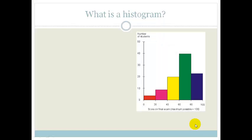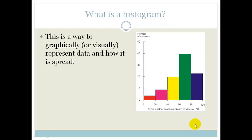So, what is a histogram? Basically, this thing on the right is a histogram. It is a way to graphically or visually represent data and how it is spread. It is like a bar graph, but there are no gaps between. It's usually used to display grouped data.